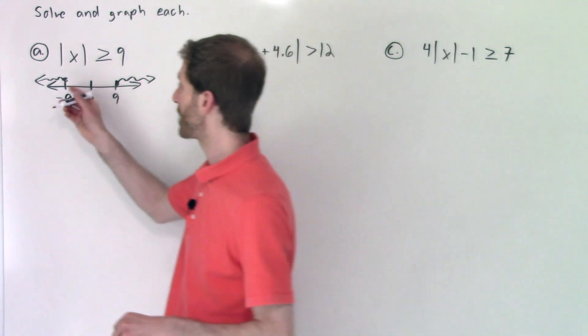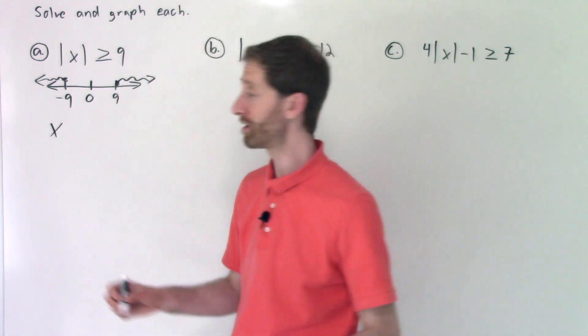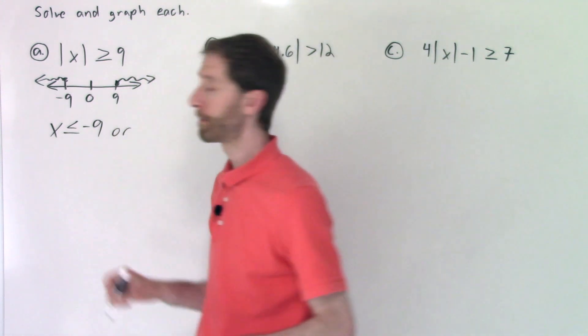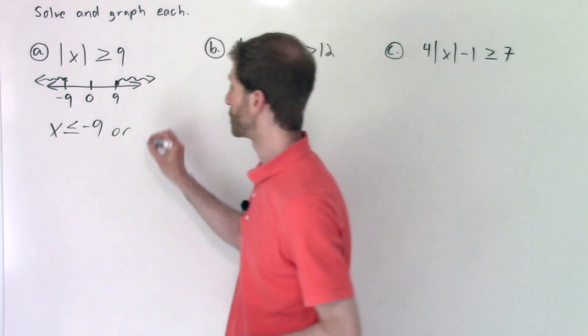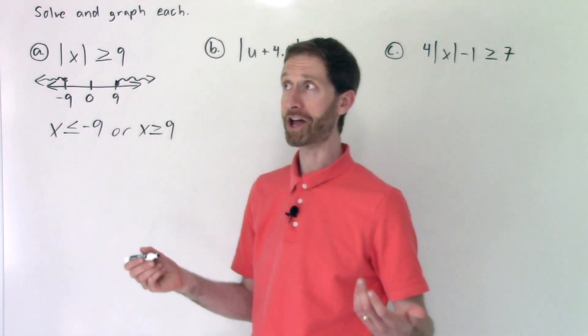So if you take a look at this and just now map this out, just like a compound inequality, we see that we have X is less than or equal to negative nine or X is greater than or equal to nine. Hey, we're done. Sweet.